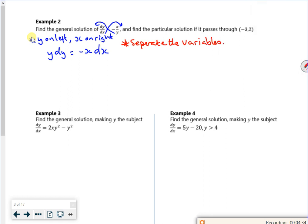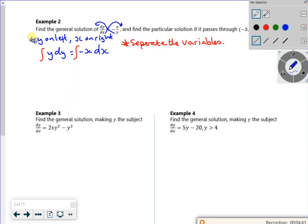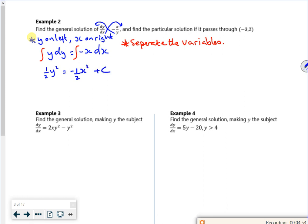And now all I do is stick an integration sign in front of it. So if I integrate y with respect to y, I get y squared over 2. If I integrate minus x with respect to x, I get minus x squared over 2. Technically, I have constants on both sides. But because they're both numbers, if I combine them, I just have a constant on one side.